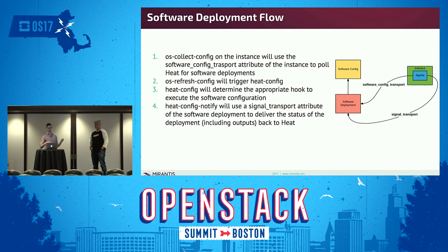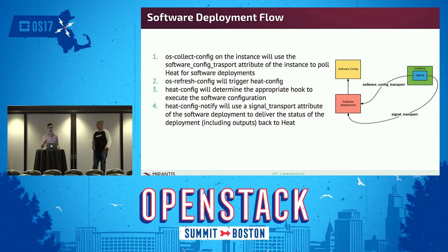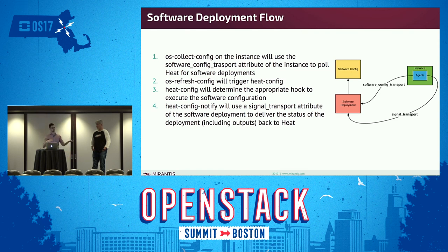This is what the software deployment flow looks like under the hood. The agent os-collect-config on the instance uses the software config transport attribute to poll Heat for software deployments. Upon determining a new software deployment, os-refresh-config triggers heat-config, which determines the appropriate hook — Ansible, Puppet, Chef, Salt — to execute the software configuration. Finally, heat-config-notify uses the signal transport attribute of the software deployment to deliver the status back to Heat, whether successful or not, including outputs.